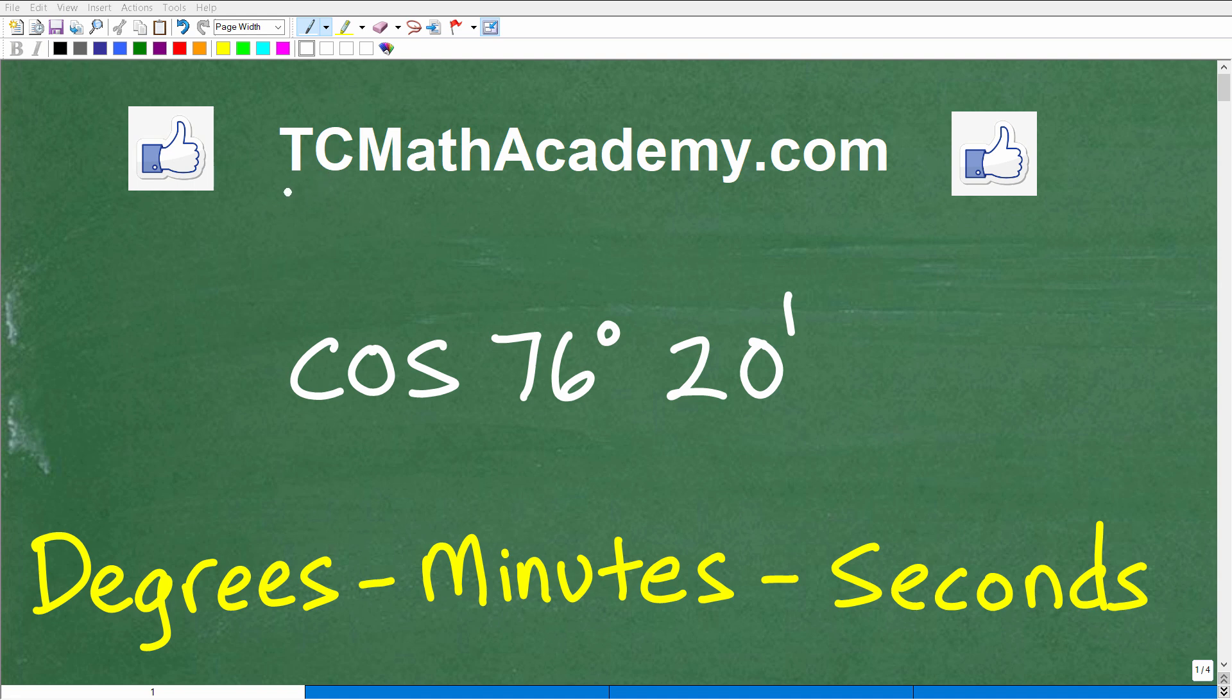Hello, this is John from TC Math Academy, and in this particular video, we're going to figure out what the cosine of 76 degrees and 20 minutes is.